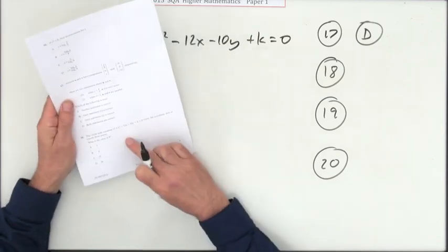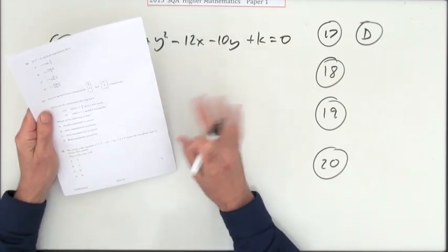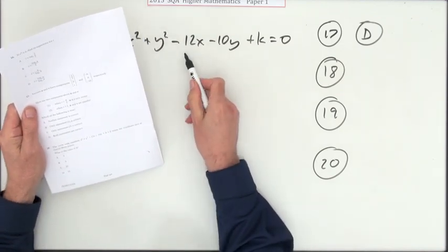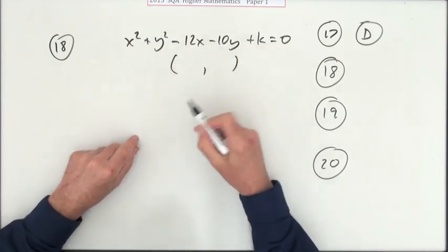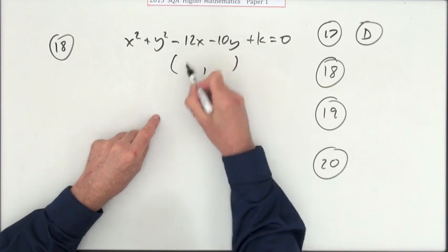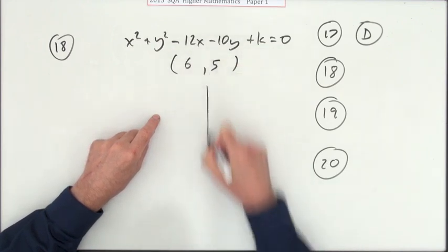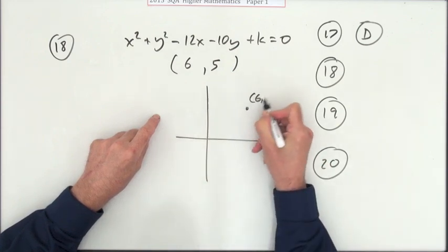Number 18 was actually one of the ones in the new higher where you had to show your working, but still just for two marks. This circle meets the coordinate axis at exactly three points. It's quite a long question compared to some others. What are the centers? Half it and opposite sign makes it six, five. If you just plot that, six along, five up, there's the center of the circle.